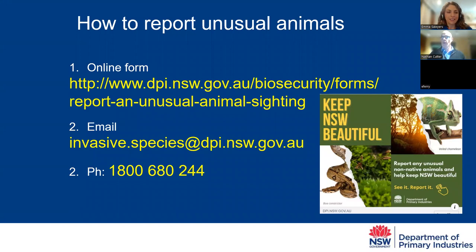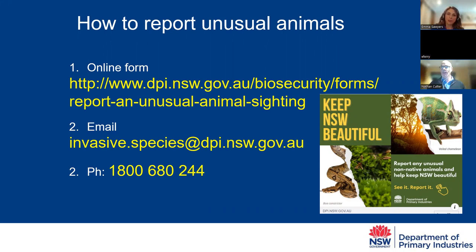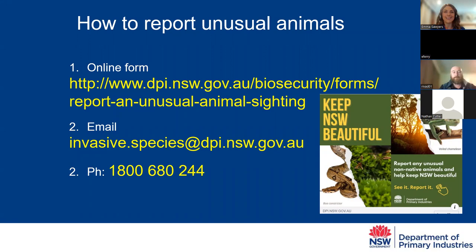Thank you for that interesting presentation, Nathan. You can certainly see why people would want to purchase and bring in some of those species illegally, and unfortunately we do see that happening. Another species which is really predominant in New South Wales and starting to head south is the cane toad. Dan is going to give us a background on what's been happening in the Sydney area and more about the species and how to ID them. Over to you, Dan.